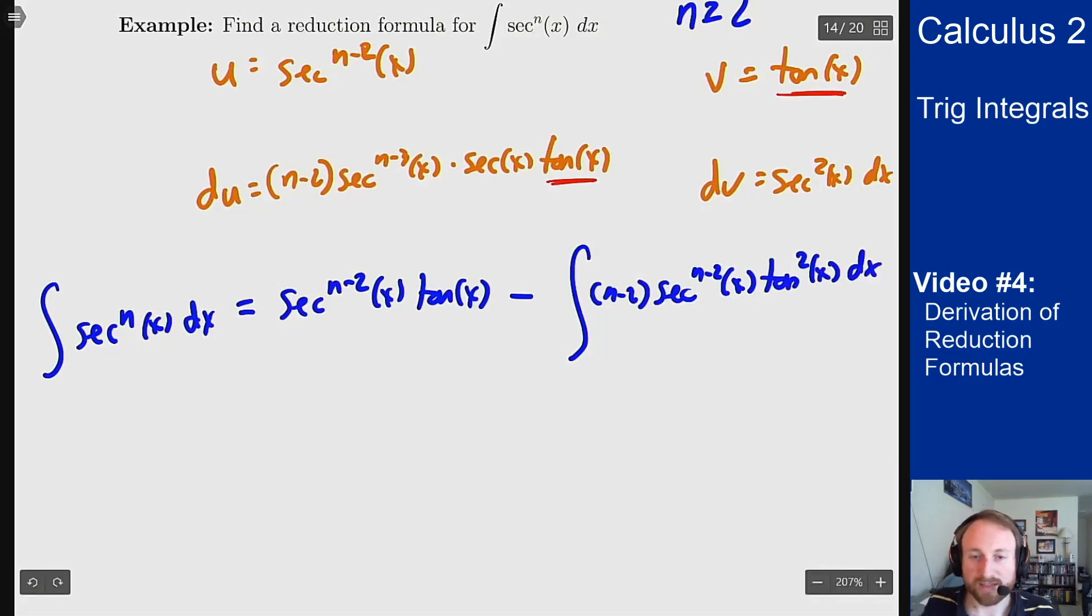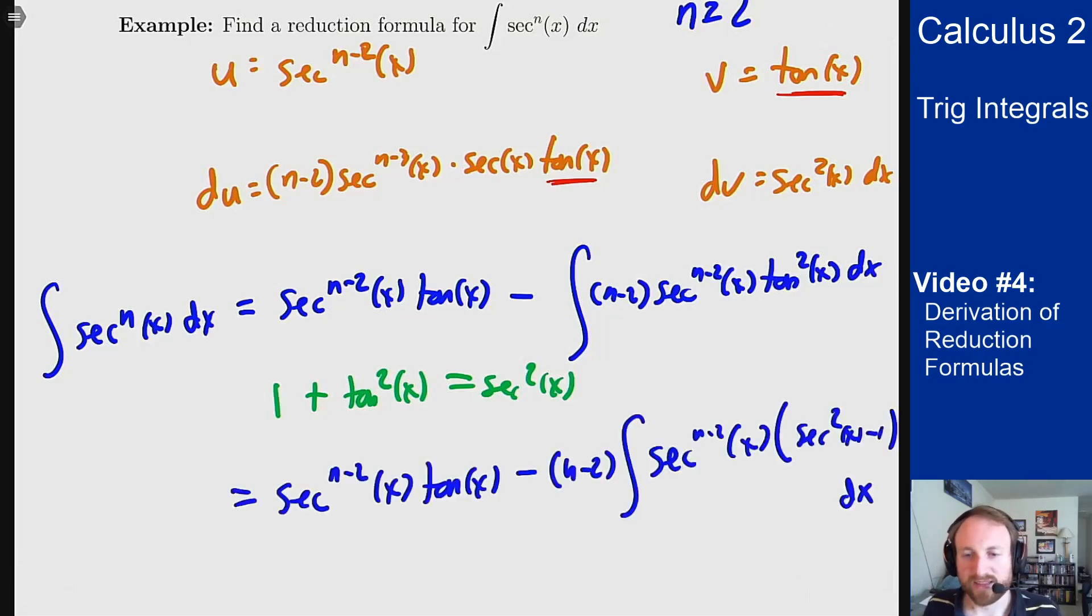And now we're going to play the same trick again. I want to rewrite tangent in terms of secant squared. And we know that the Pythagorean identity tells us that 1 plus tangent squared equals secant squared. So I can replace the tangent squared by a secant squared minus 1, and then split the integrals and play the same game like before.